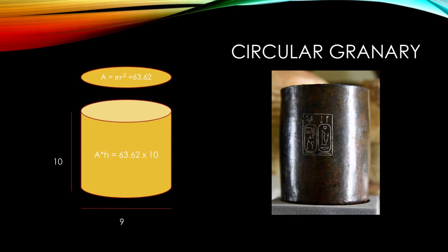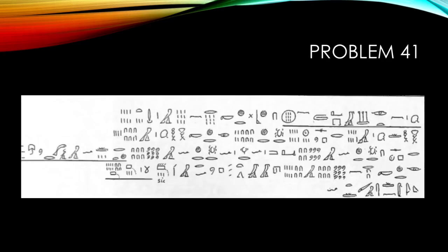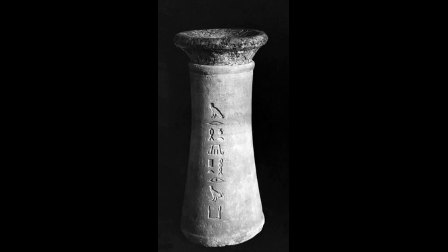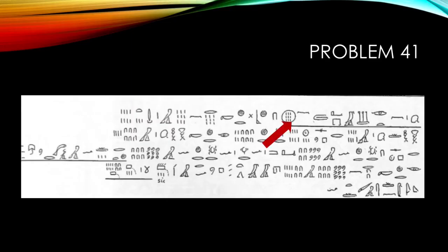Let's now look at the way it was solved in the original papyrus. So problem number 41. It says find the volume of a cylindrical granary of diameter 9 and height 10.